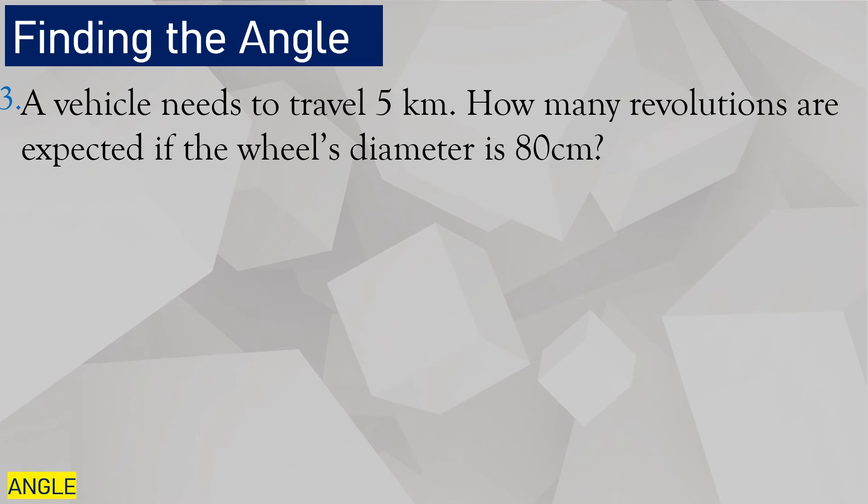In our next example, a vehicle needs to travel 5 kilometers. How many revolutions are expected if the wheel's diameter is 80 centimeters? Take note, diameter. The circumference of that circle is 2 pi r.